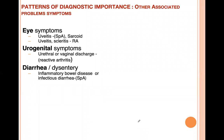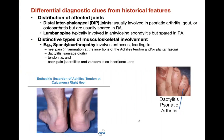Don't forget when someone comes in, especially a young person, with a swollen hot knee to ask if they're having diarrhea. The distribution of joints also helps: the distal interphalangeal joint is involved in psoriatic arthritis, gout, or osteoarthritis, but usually spared in rheumatoid arthritis. The lumbar spine is involved in ankylosing spondylitis but spared in rheumatoid arthritis. You can see inflammation at the insertion of the Achilles tendon — common in spondyloarthropathies — and dactylitis in psoriatic arthritis.